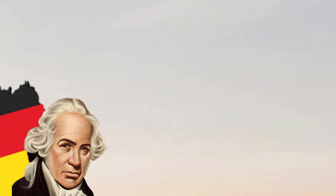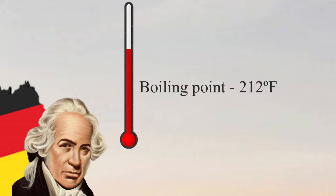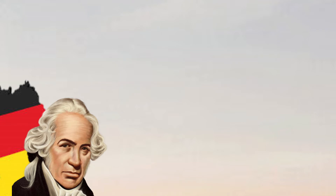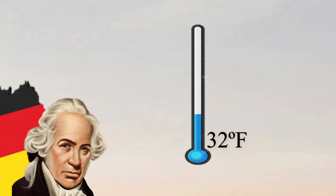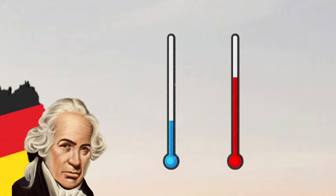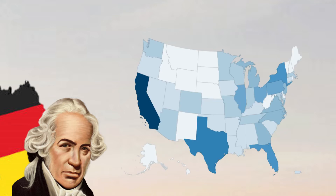Using this scale, Fahrenheit measured the temperature of boiling water as 212 degrees Fahrenheit. He later adjusted the freezing point of water from 30 degrees Fahrenheit to 32 degrees Fahrenheit, thus making the interval between the freezing and boiling points of water an even 180 degrees. The Fahrenheit scale is commonly used in the United States.